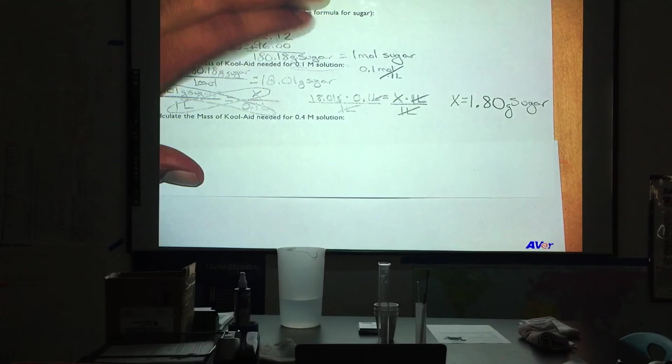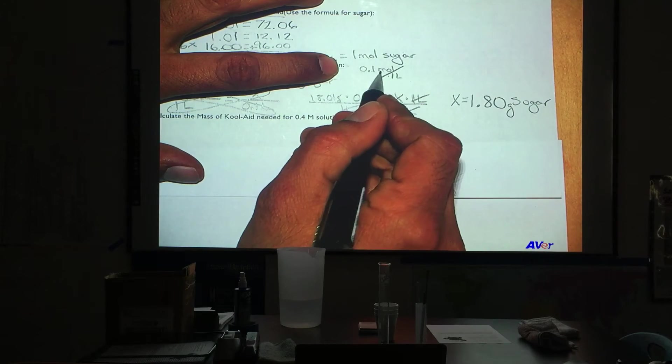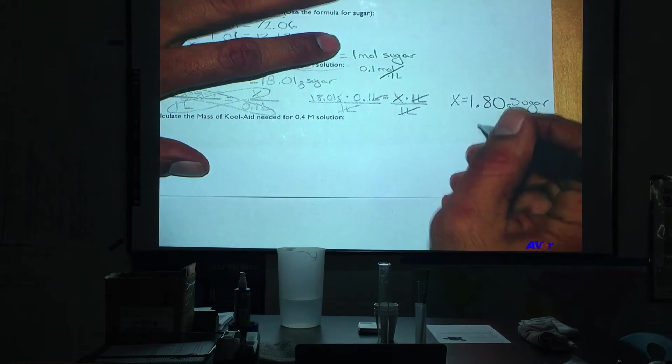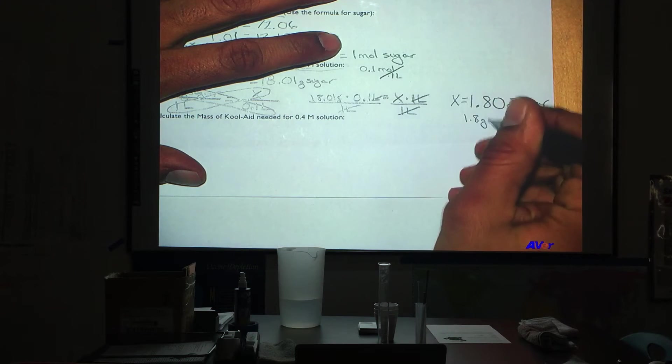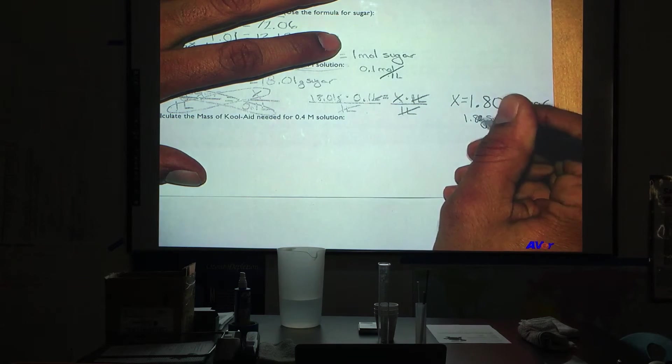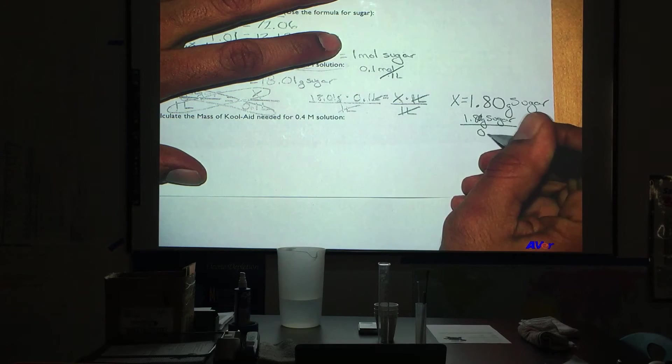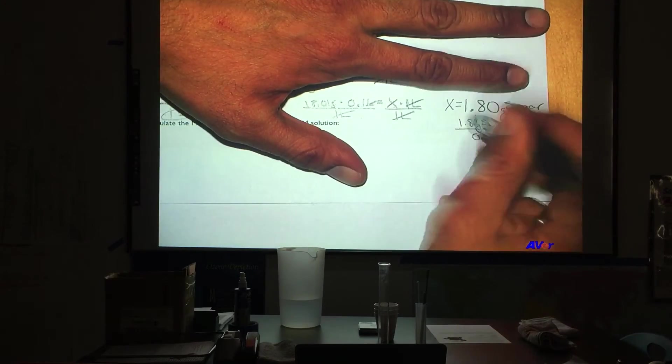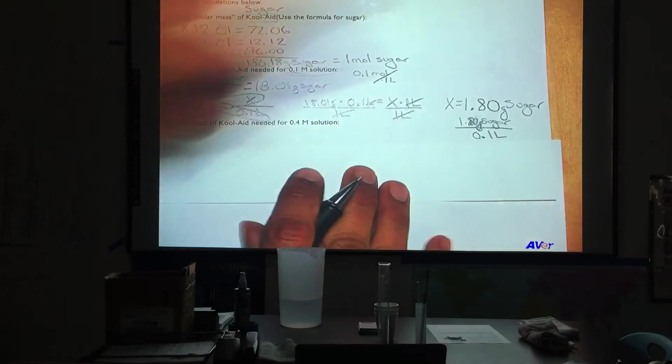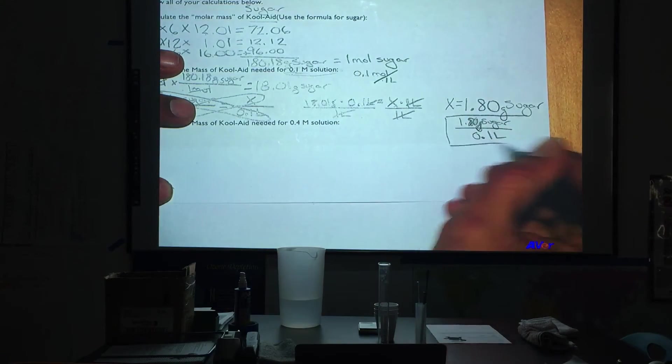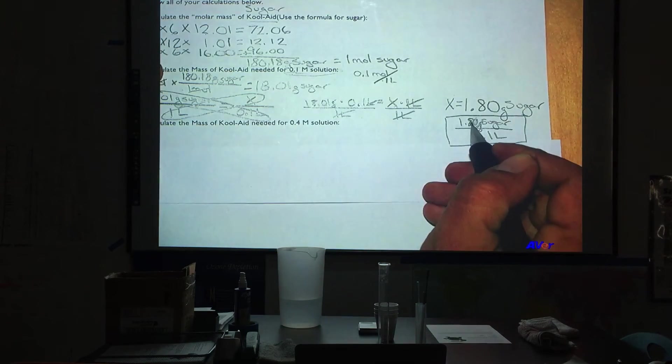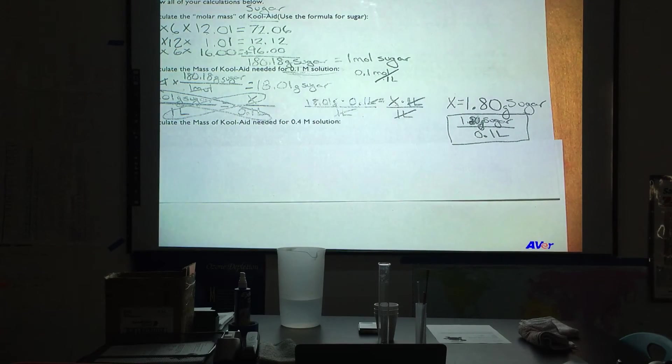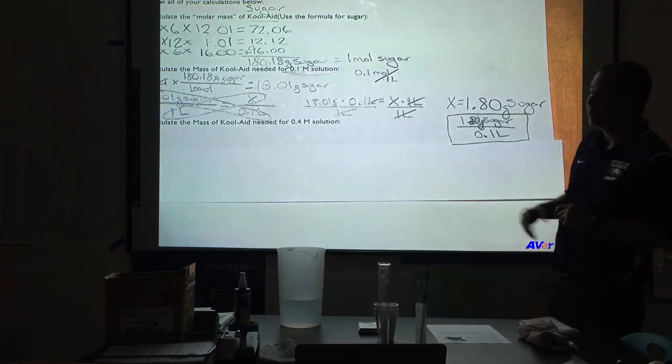Now in our new solution, that 0.1 mole in the 0.1 liter is going to require 1.80 grams of sugar. Let me put that 0 back because we are measuring to two decimal places. It is going to be 1.80 grams in 0.1 liter of water. This is our recipe to create this 0.1 molar solution. This can get kind of tricky. Let's do the next one.